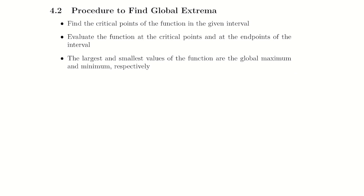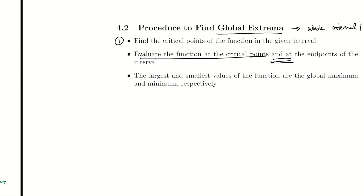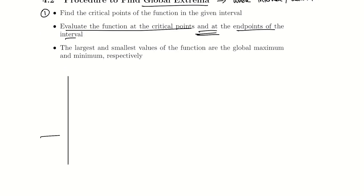That was for finding local extrema — maxes and mins within their own neighborhoods. To find global extrema, you're looking at a whole interval or domain. The process is very similar: find the critical points, evaluate the function at those critical points to find their heights, and also evaluate at the endpoints of the interval — something students often forget. Then compare all those values: the largest and smallest are the global max and min.